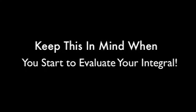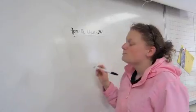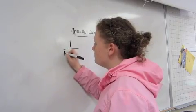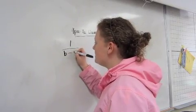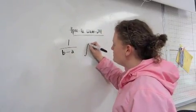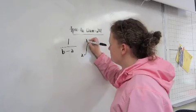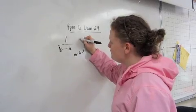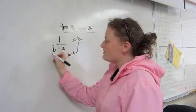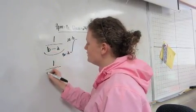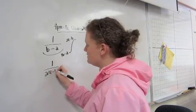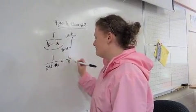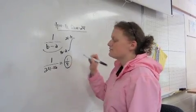We have to keep this in mind when we start evaluating our integral. Because we want the average, we have to do what's called finding the average, where we put 1 over b minus a. b and a are the bounds of our integral. In this case, 16 and 24. So, our average will be 1 over 24 minus 16, which is equal to 1 eighth.